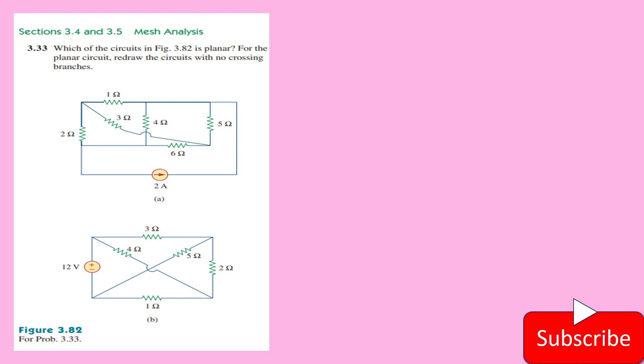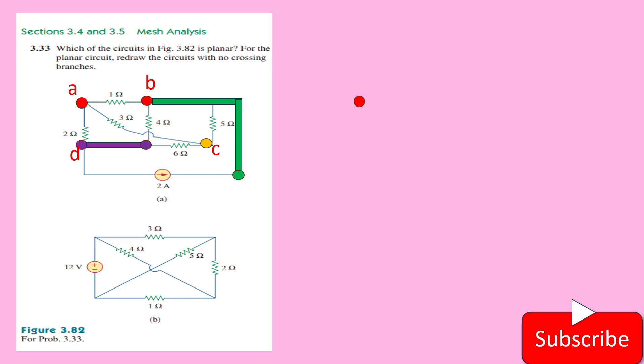We are going to redraw the circuits. That way, we will be finding out whether they belong to planar or non-planar category. Let's first start with the A problem. We will mark the nodes for the corresponding network. This is A node, this is B node, and this B node is actually extending up to this because in between there are no elements connected. So this is our B node, then this is our C node and this is the D node which is also extending up to this. We mark it here for redrawing the circuit. These are A, B, C and D nodes.